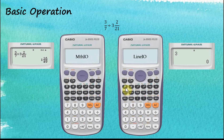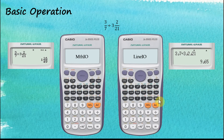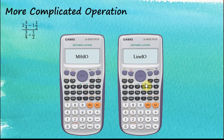For Linear input, we enter 3 over 7 divided by 3 over 2 over 21, then press equal to get the answer. Let's move on to a more complicated operation of fractions.